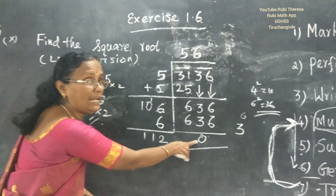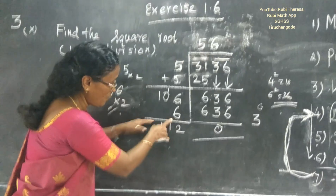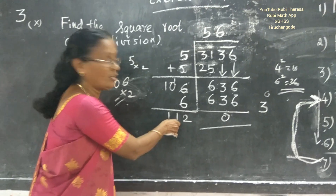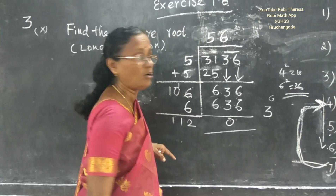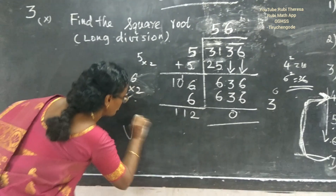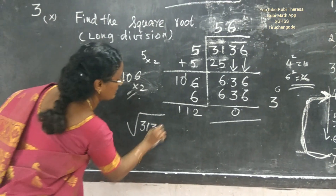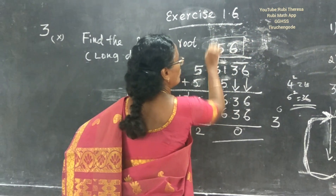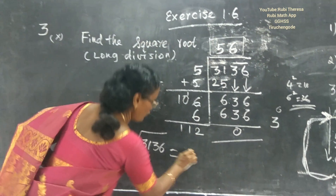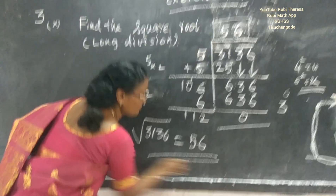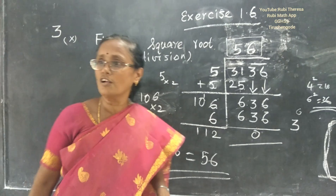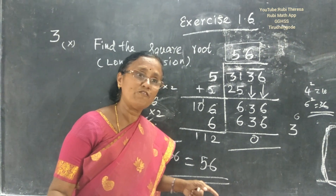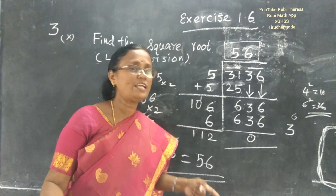We got the remainder 0, so the process is complete. Since the remainder is 0, the square root of 3136 is found above — the answer is 56. Do you follow? Yes. Do you find it easy? Yes. Thank you, ma'am.